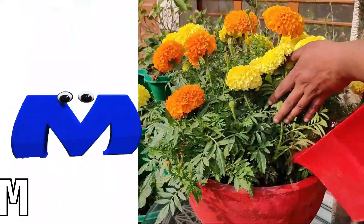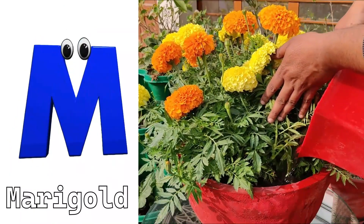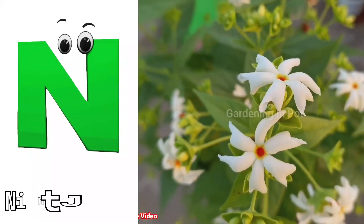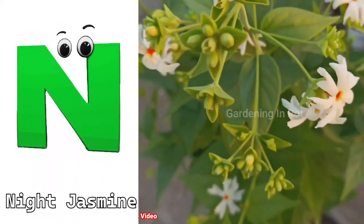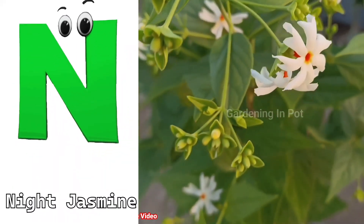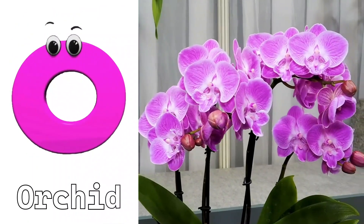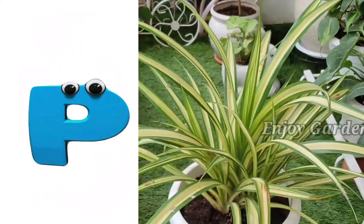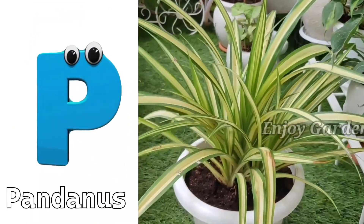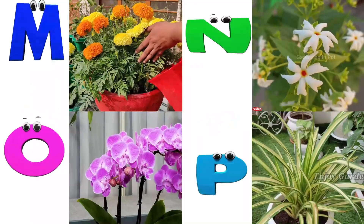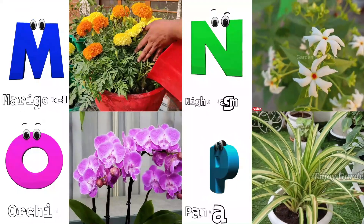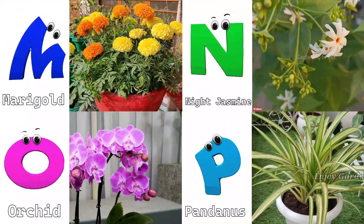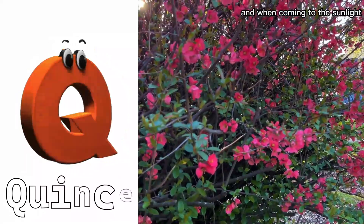M is for Marigold. N is for Night Jasmine. O is for Orchid. P is for Pandanus.